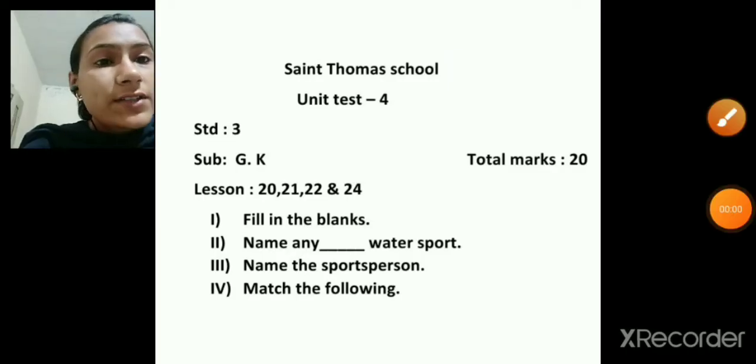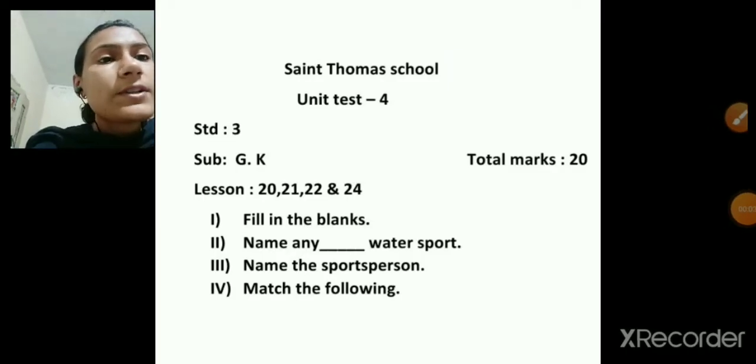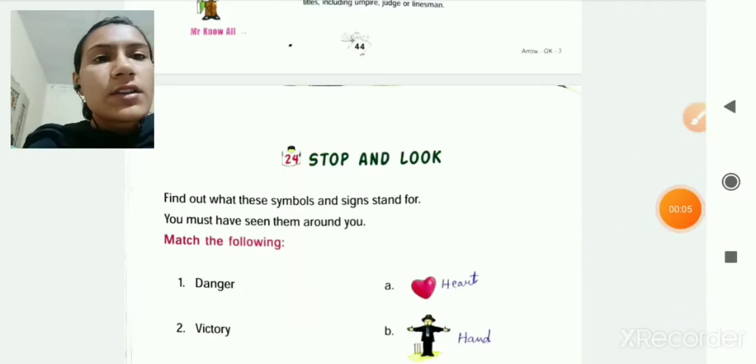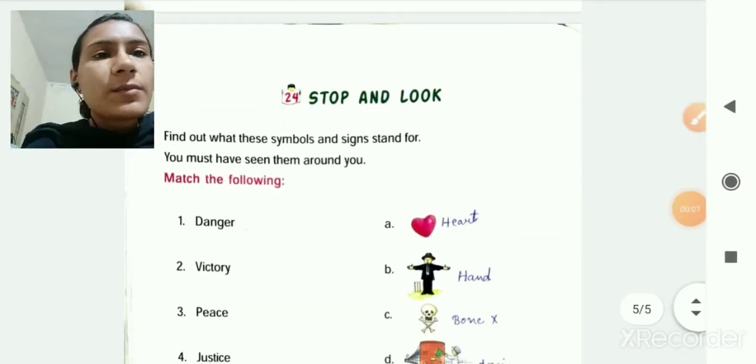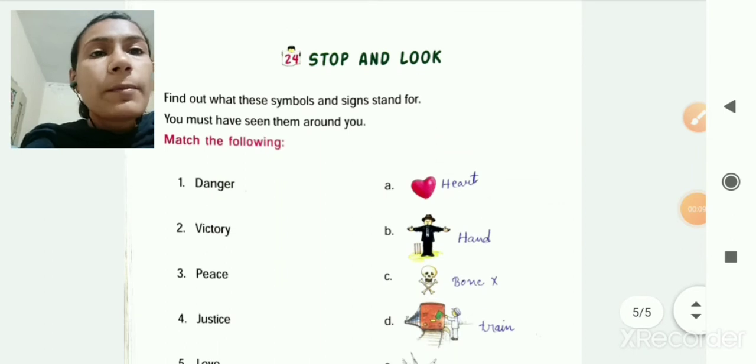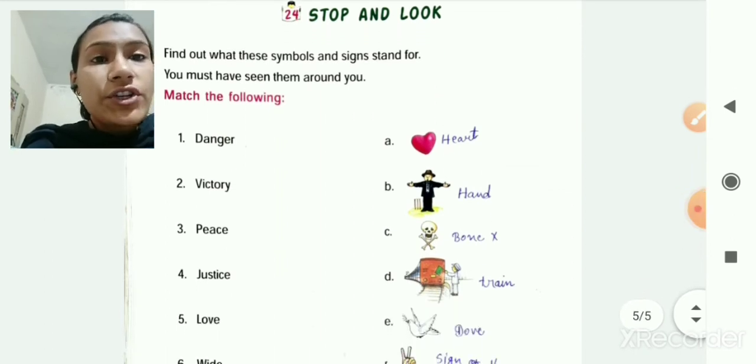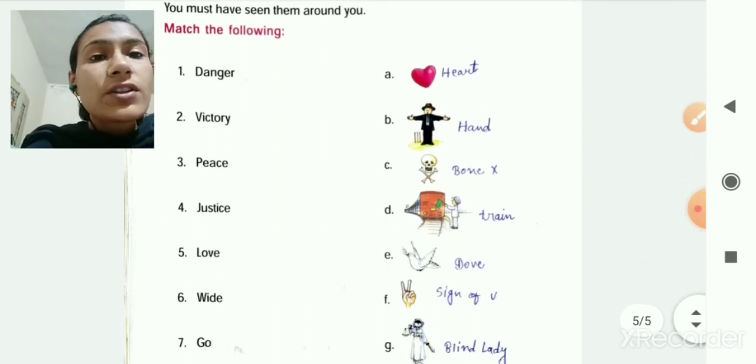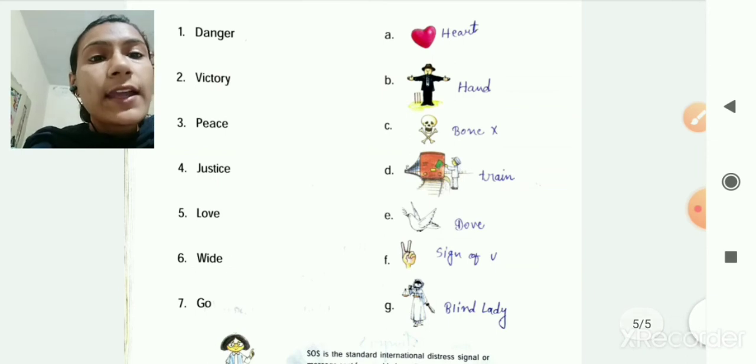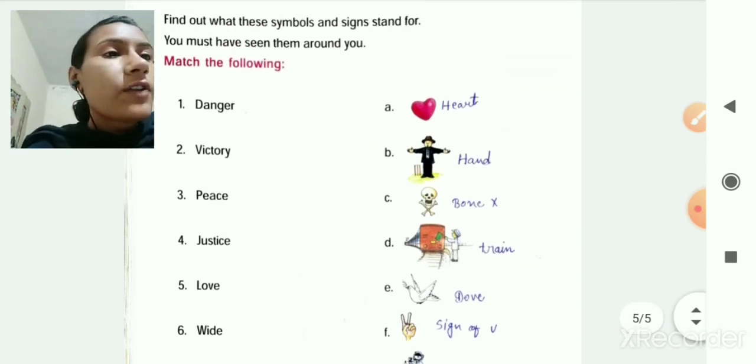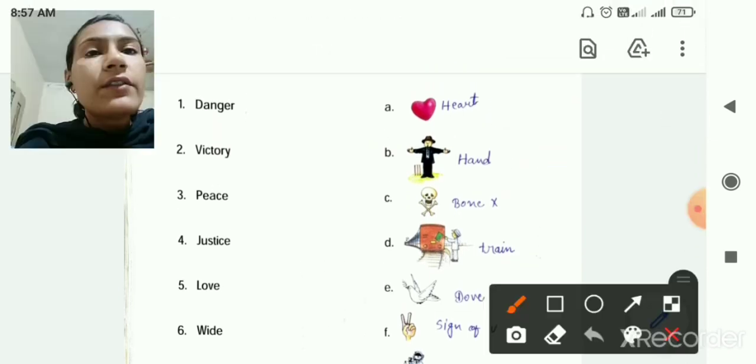Now let's see the next roman. So next roman is match the following from lesson number 24. So you can see here lesson number 24, stop and look, match the following. Danger, victory, peace, justice, love, fight and go.